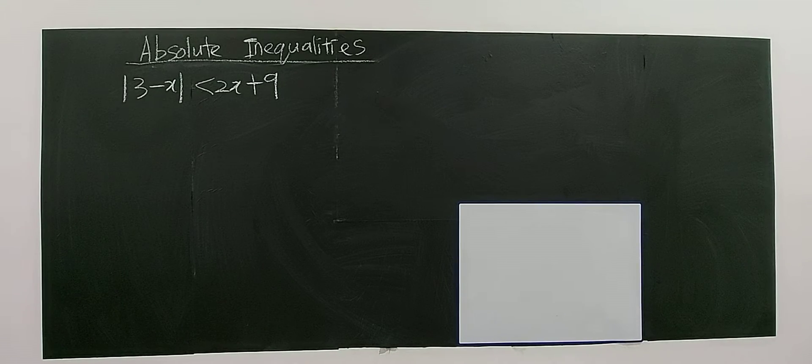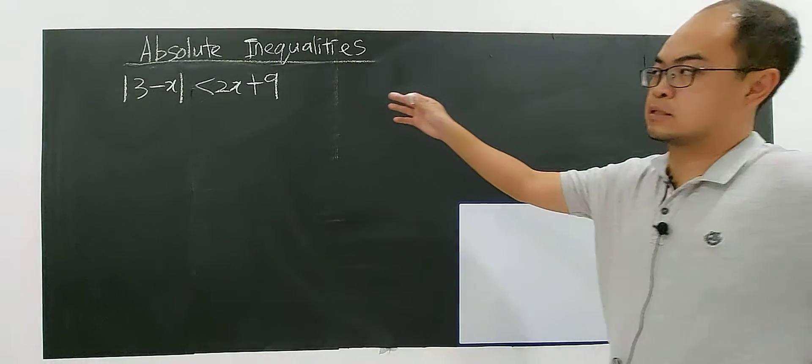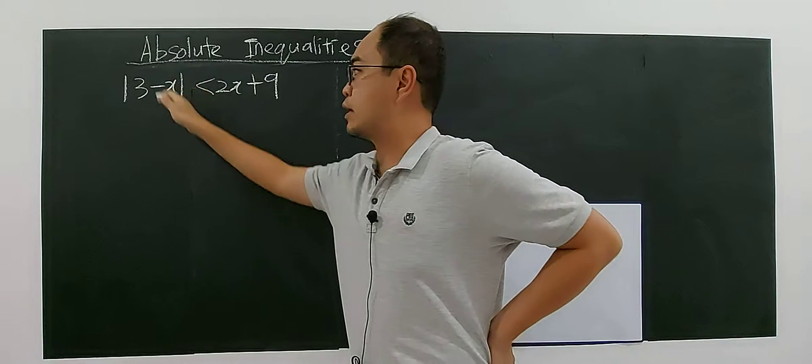Alright, let's look at this example. It's about modulus of 3 minus x less than 2x plus 9. As you see, this is the absolute inequality where there is an absolute.